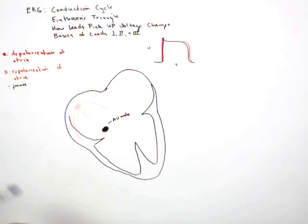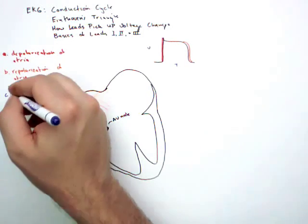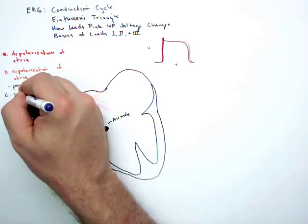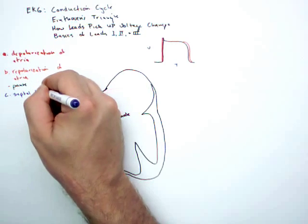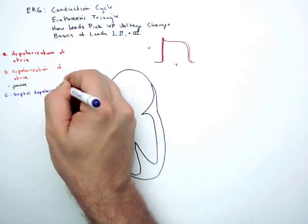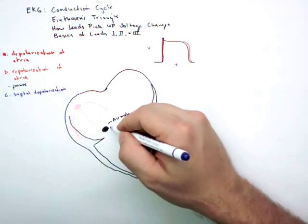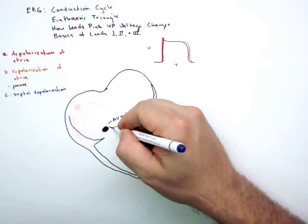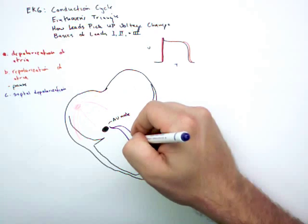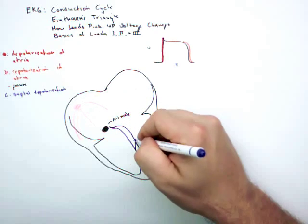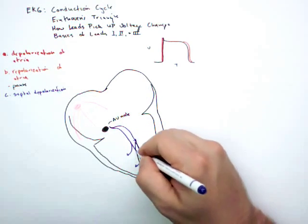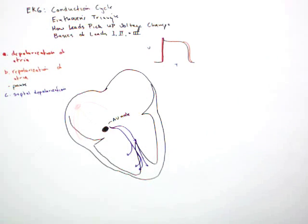Next step, and this is one that you might not have heard before, it's really critical if you want to understand everything in the EKG. This is important for understanding the Q wave. This is called septal depolarization. There's a left bundle branch and a right bundle branch, and I'm going to depolarize the septum.